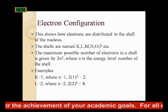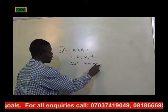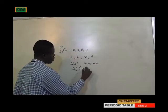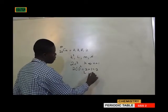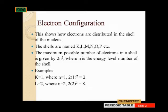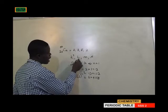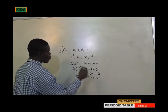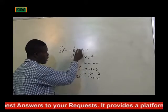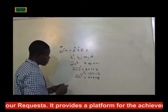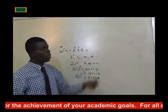For example, for the K shell, N equals 1, so the maximum number of electrons is 2 × 1² = 2. For the L shell, N equals 2, so the maximum is 2 × 2² = 2 × 4 = 8. So the maximum number of electrons for the L shell is 8. You can use this formula to calculate the maximum number of electrons for each respective shell.